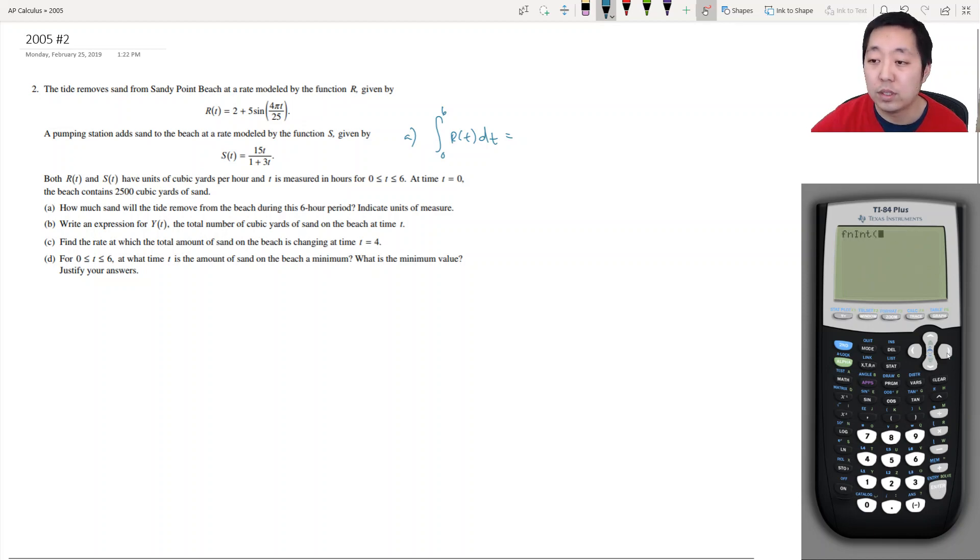So I am going to go to the integral. I am going to integrate 2 plus 5 sine of 4 pi x divided by 25. We are going to integrate over x from 0 to 6. And this is going to be 31.816, and this is cubic yards of sand.